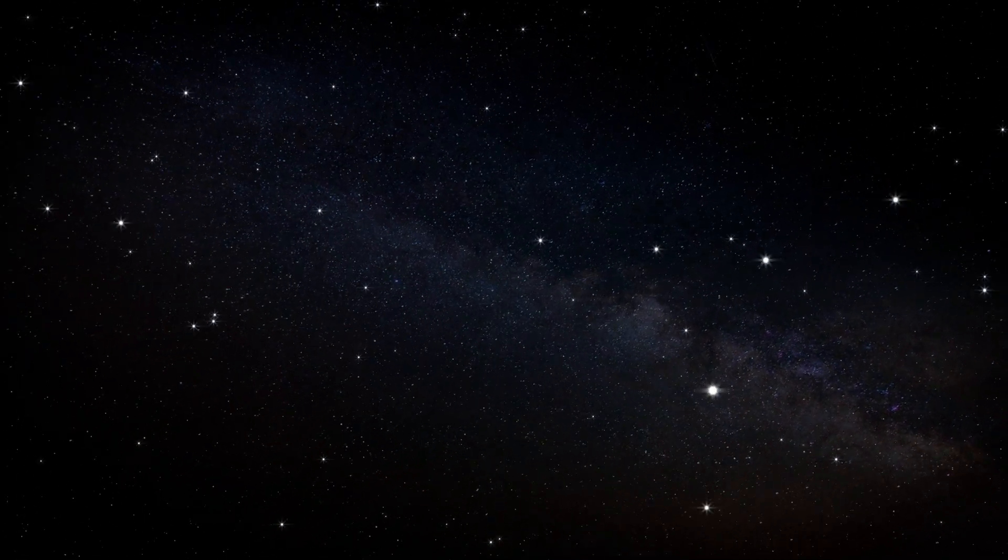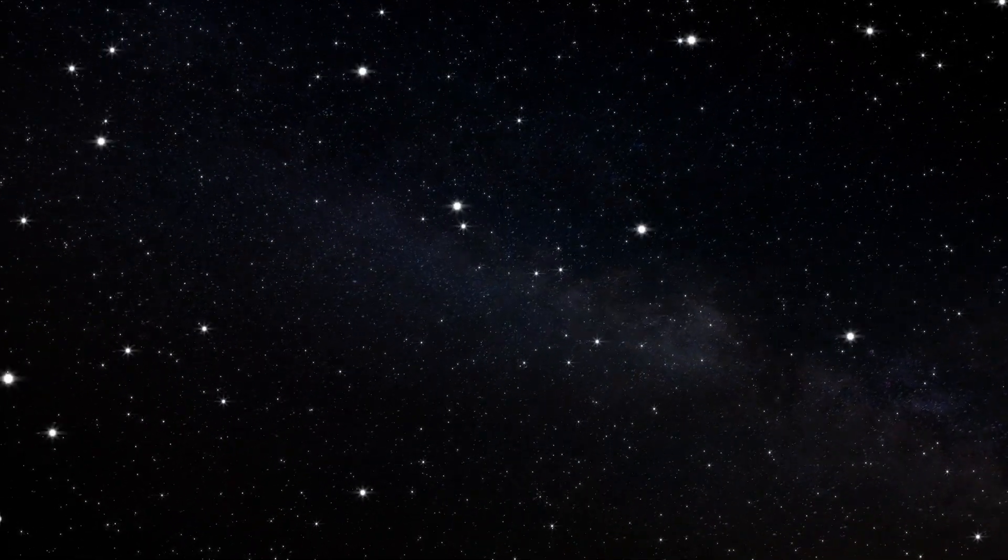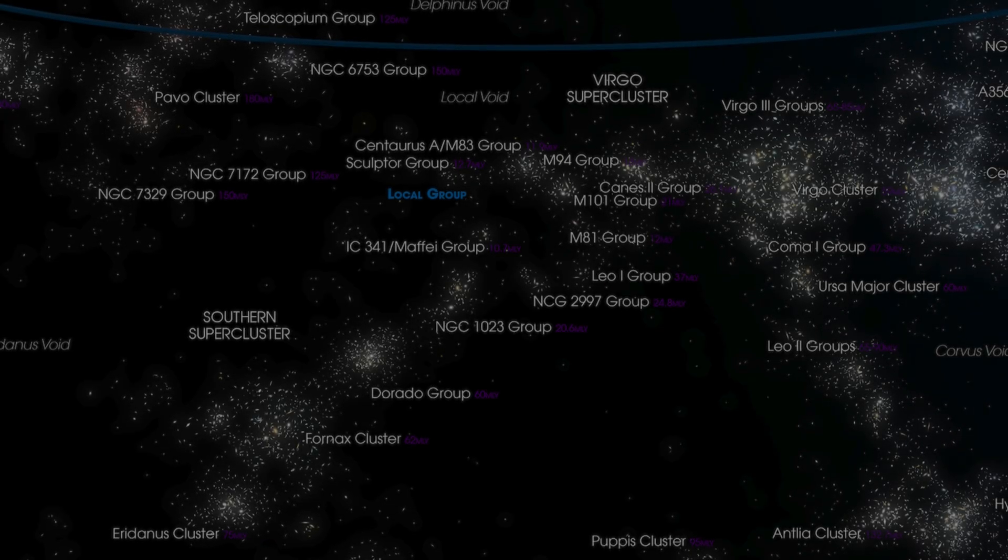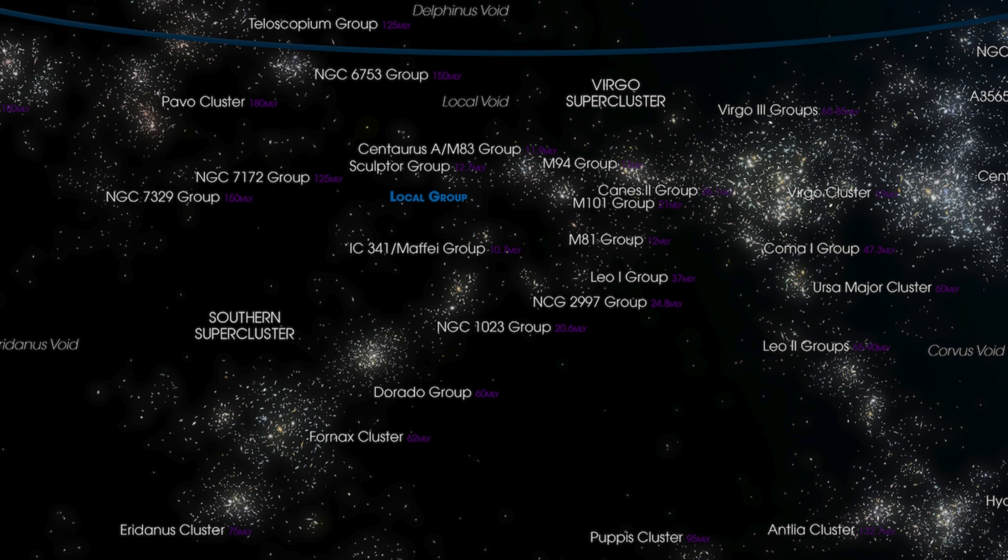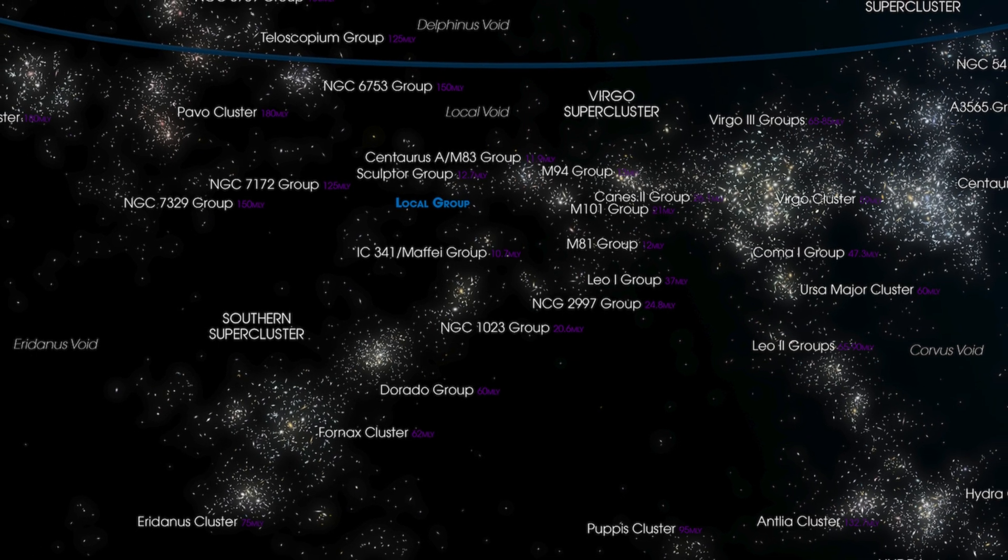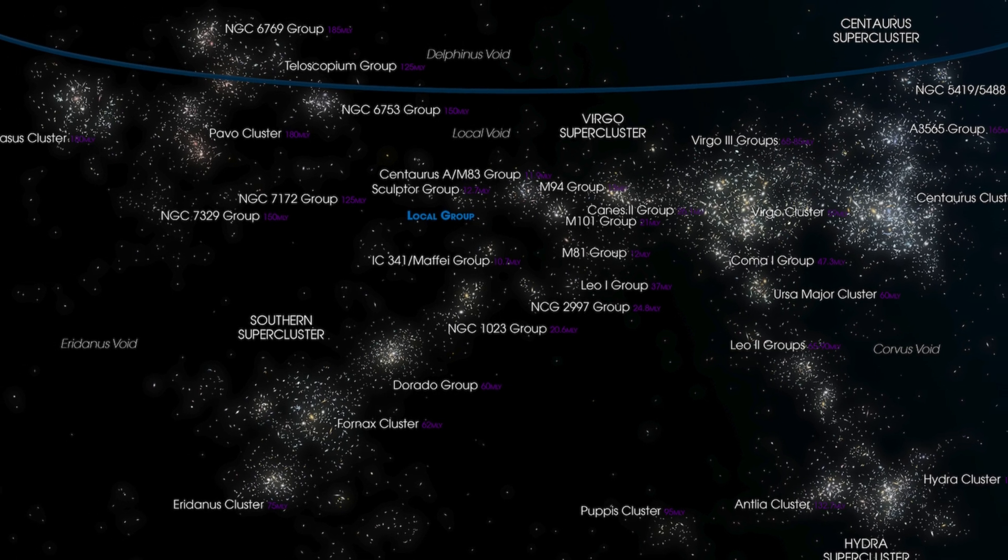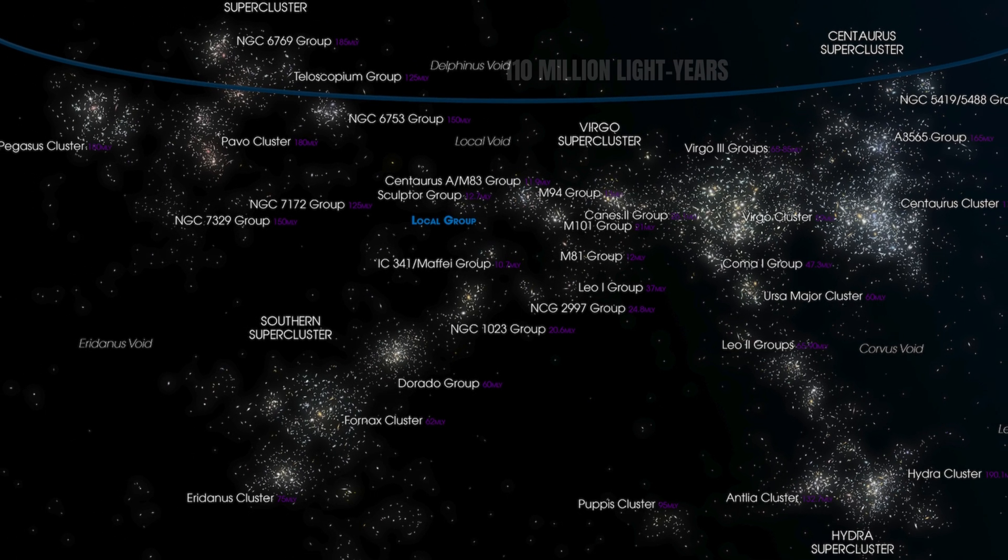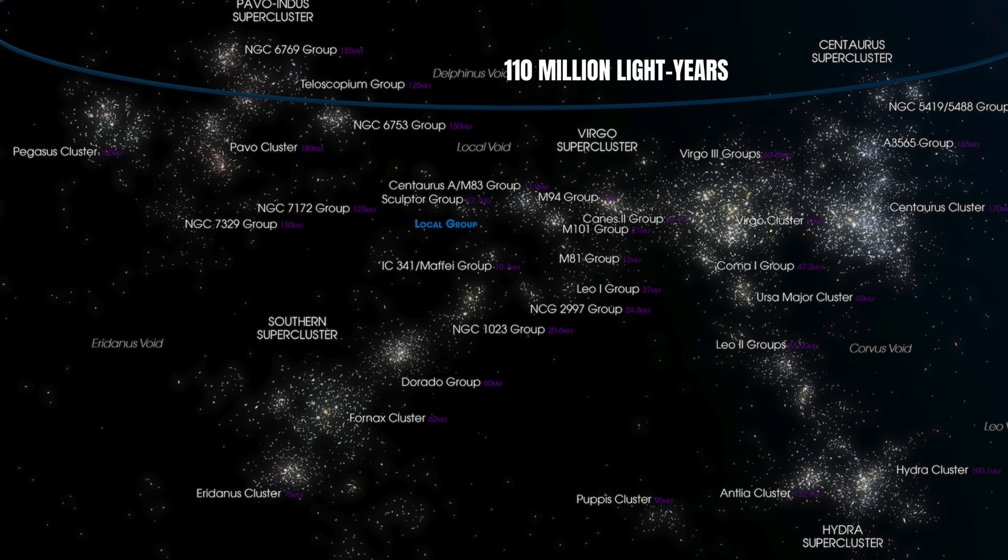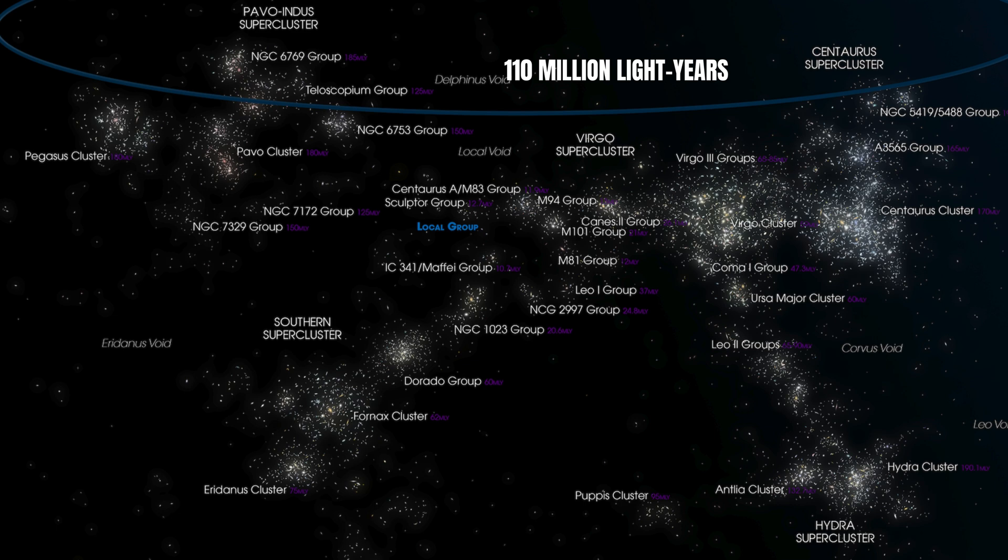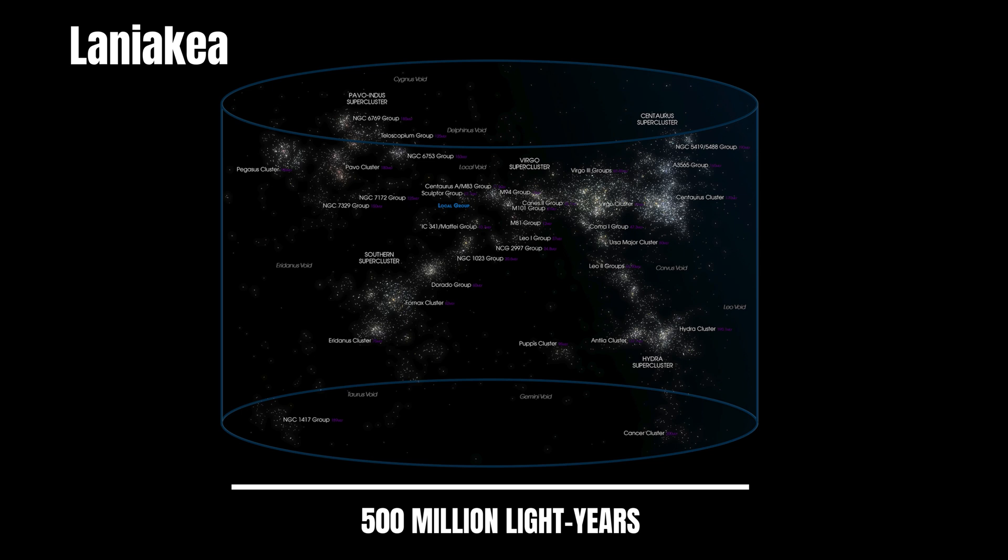Beyond the Local Group, we encounter an even grander structure, the Virgo Supercluster. Spanning about 110 million light-years in diameter, or 33 megaparsecs, this massive congregation contains thousands of galaxies, grouped into at least 100 galaxy clusters and groups. Each of these clusters harbors countless stars and planetary systems, forming an immense network of cosmic structures bound together by gravity. Yet even the Virgo Supercluster is just a small part of something even more colossal.